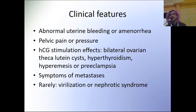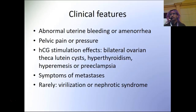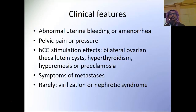If there is lung metastasis, the patient can present with shortness of breath, cough, chest pain, or hemoptysis. Vaginal metastasis presents with vaginal bleeding or purulent vaginal discharge. CNS metastasis presents with neurological symptoms. Rarely, virilization may occur due to Leydig cell hyperplasia leading to elevated testosterone levels, or nephrotic syndrome, but both are very rare.